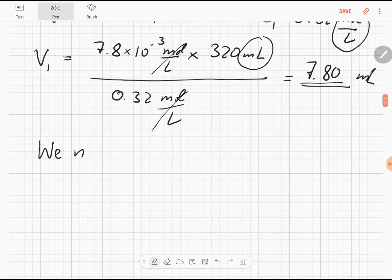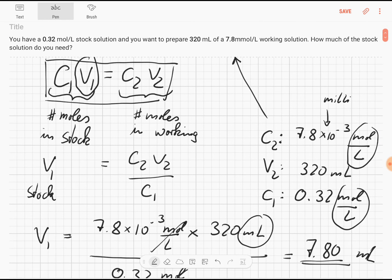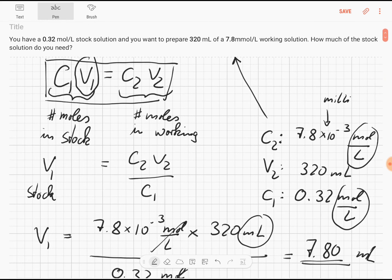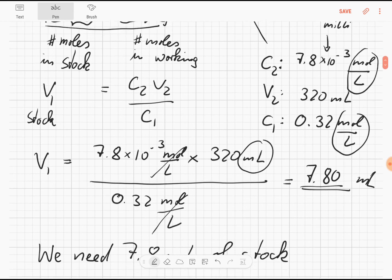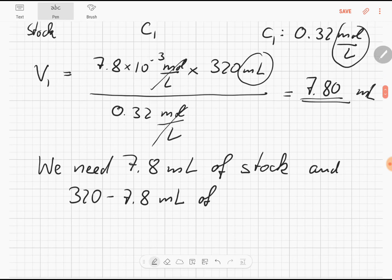We need 7.8 milliliter of stock and we have to make up the rest of our volume with water or buffer or something like that. We have 320 milliliter, so 320 minus 7.8 milliliter of water, or buffer, or whatever we use. Let's just simply say solute, so that's very general.